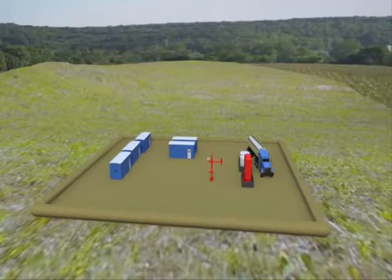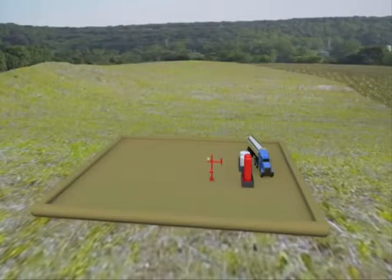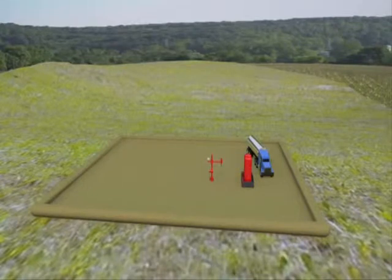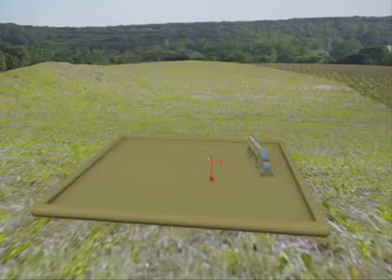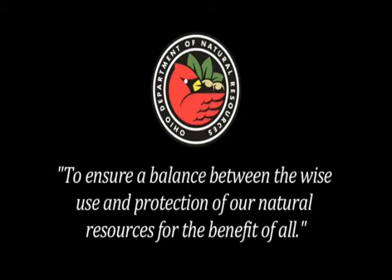Once the well is no longer in production, the operator must apply to have the well plugged. ODNR regulations require the owner of the well to restore the location to a natural state. All structures and storage units must be removed. ODNR's mission is and will remain to ensure a balance between the wise use and protection of our natural resources for the benefit of all.